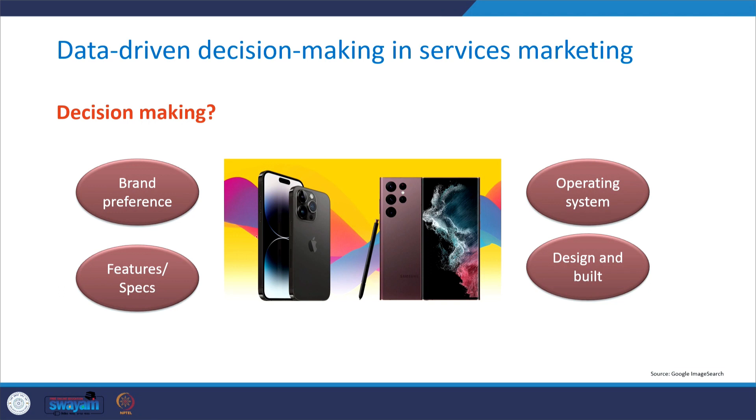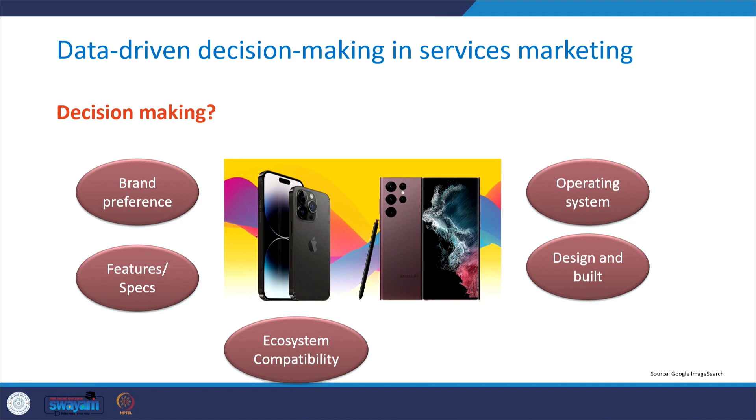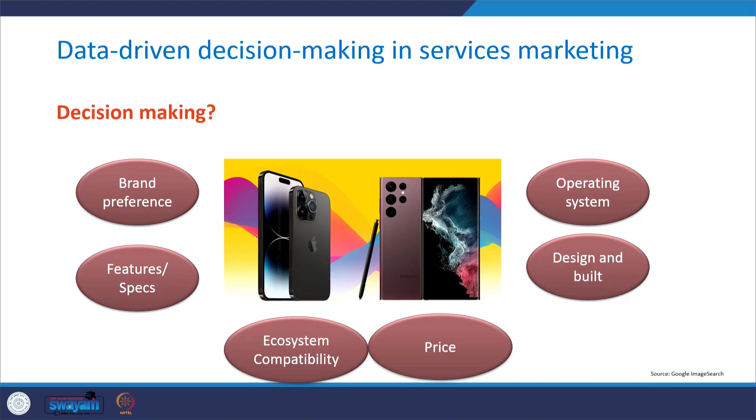Next criteria can be design and build quality. Aesthetics and build quality can influence the decision — some customers may prefer the sleek design of the iPhone while others may favor the larger screen and different design of the Samsung Galaxy. Another parameter can be ecosystem compatibility: customers may consider the compatibility of the smartphone with other devices they own such as laptops, tablets, or even smartwatches. And for most of them, price plays a crucial factor as well — the cost of the phones is a significant factor, and the customer may weigh the features offered by each phone against their budget.